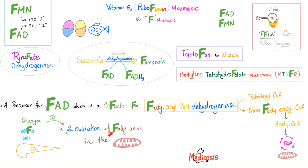Beta oxidation of fatty acids happens in the mitochondria. Glucagon can actually stimulate this process. Where does glucagon come from? From the pancreas — specifically the endocrine pancreas, the alpha cells. The beta cells produce insulin, not glucagon. Would insulin stimulate beta oxidation? No — it will inhibit beta oxidation. Insulin wants you to store fat, not burn fat. Biochemistry makes so much sense once you understand what you're talking about.